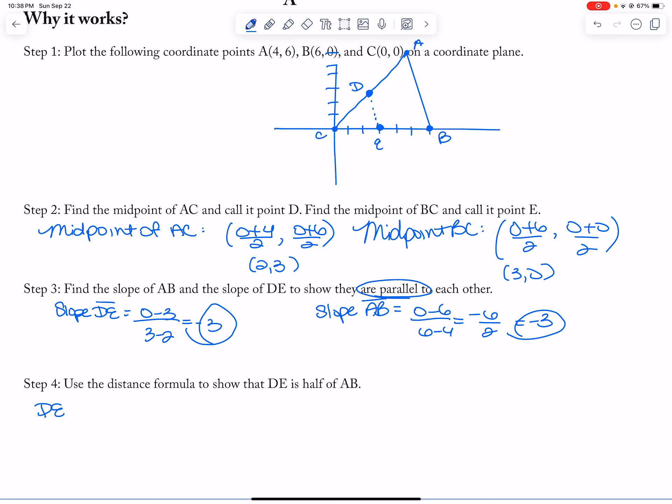Now, DE, we're going to do the distance formula, which is the change in X squared plus the change in Y squared. So that means 3 minus 2 squared plus 0 minus 3 squared. So then I get the square root of 10.